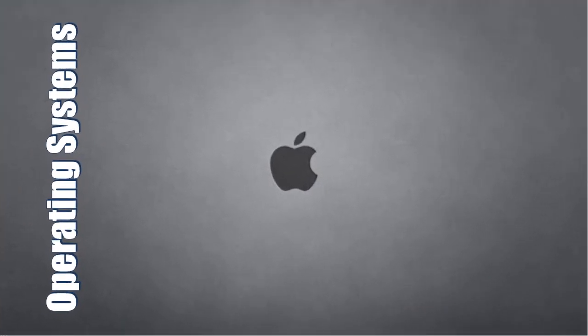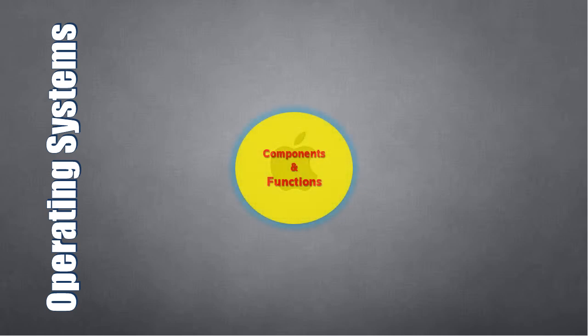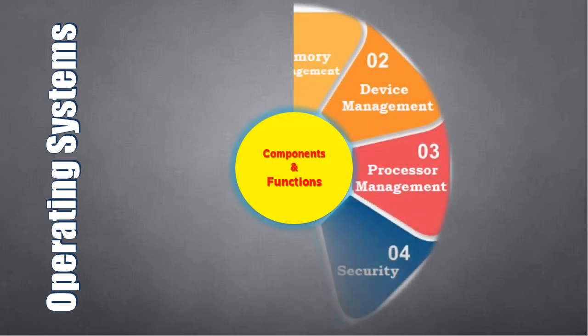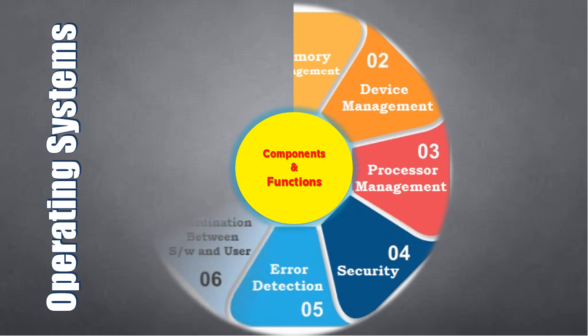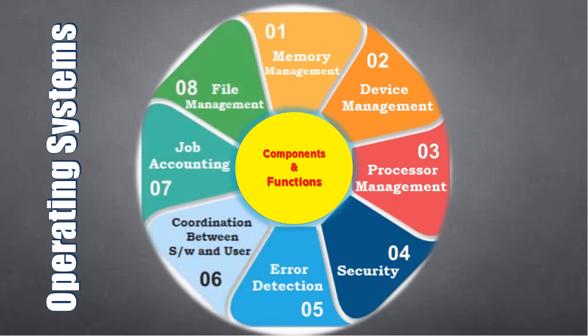There are eight types of components and functions in an operating system: 1) Memory Management, 2) Device Management, 3) Processor Management, 4) Security, 5) Error Detection, 6) Coordination between the user, 7) Job Accounting, and 8) File Management.